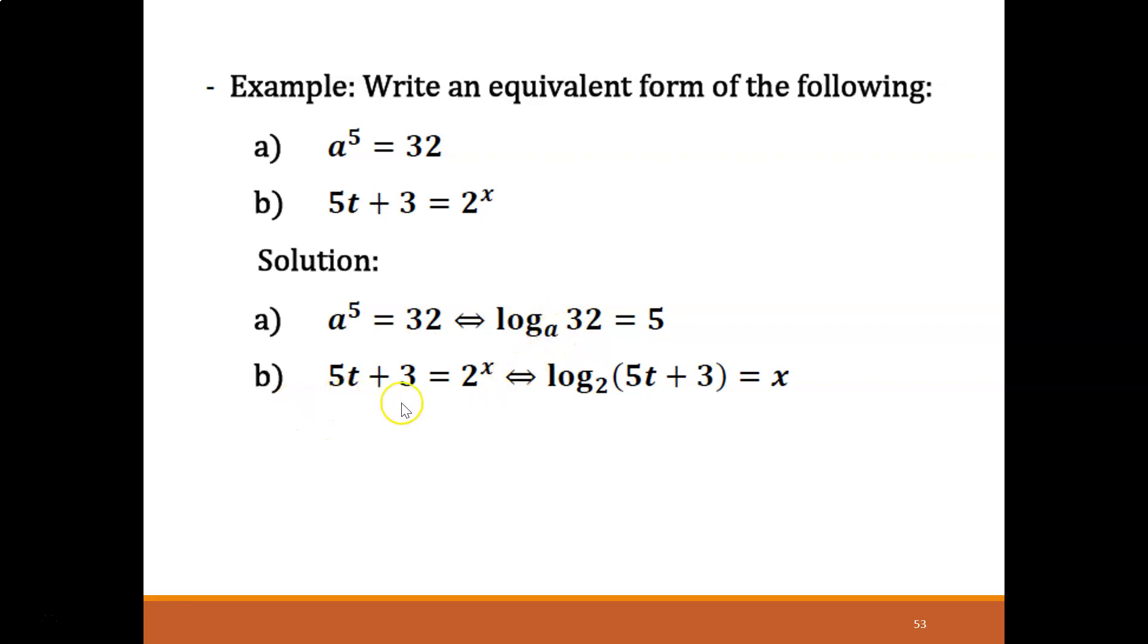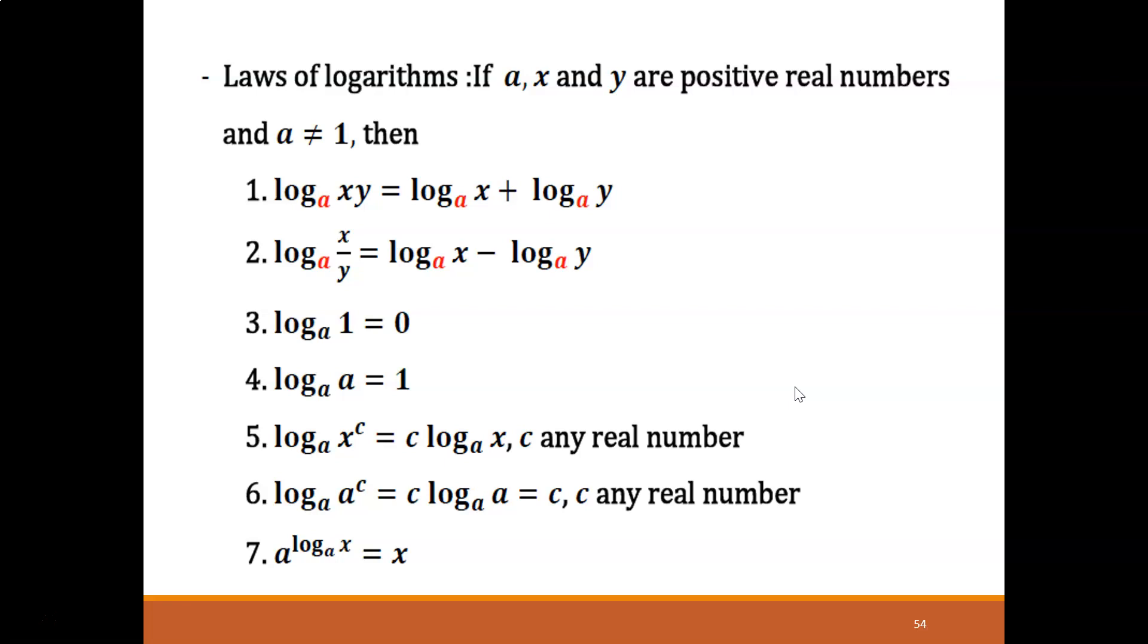How about this one, question b: 5t plus 3 equals 2 to the power of x. When in log form, we look at this one as the base. 2 is the base. So log base 2 of 5t plus 3 equals x, the power from before. That's it, easy right?